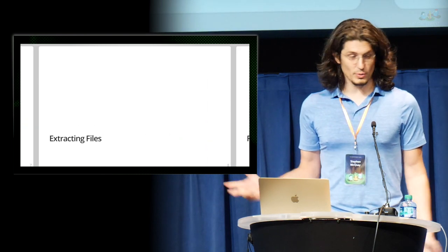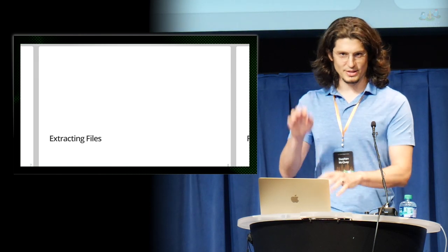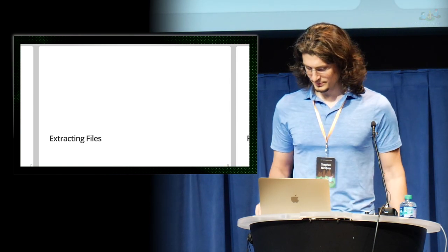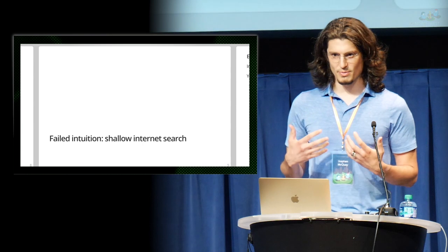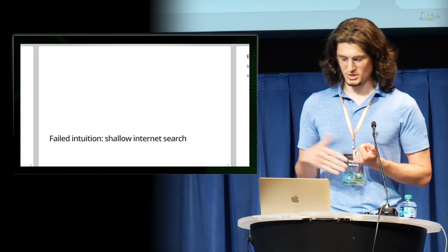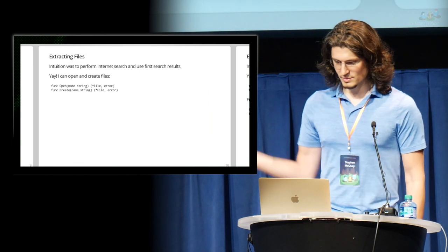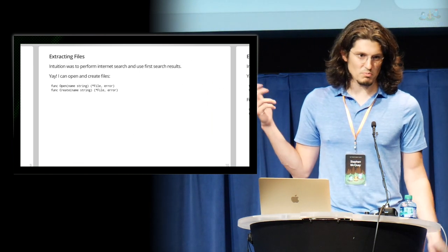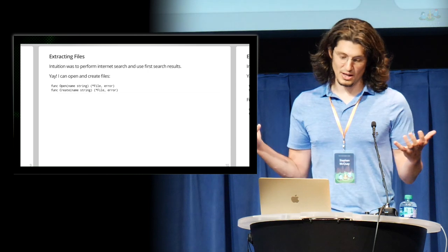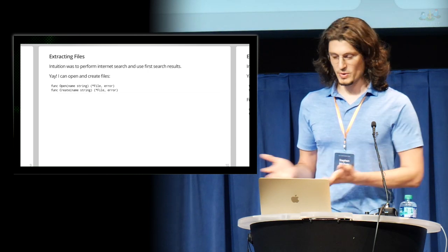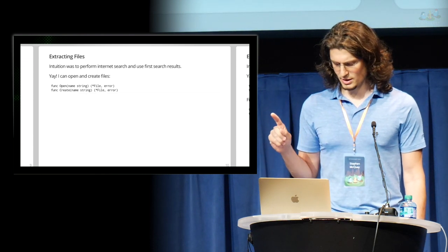I did what any budding gopher would do — I did an internet search for how to write a file to the file system. My failed intuition was that I didn't do a very deep search. I just happened upon the OS package in the standard library and found a couple of functions that I thought would prove useful: open and create. I read the documentation — open something that exists, create a file that doesn't yet exist. Then I noticed that it returns this file handle pointer thing.